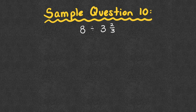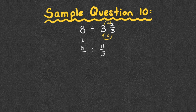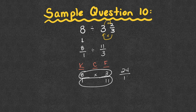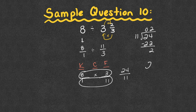Sample question ten: eight divided by three and two-thirds. Remember, eight becomes eight over one. Convert the mixed number: three times three is nine, plus two is 11 — eleven-thirds. Applying KCF: keep eight over one, change division to multiplication, flip eleven-thirds to three over eleven. Looking diagonally, we cannot simplify. Multiply across: eight times three is 24, one times eleven is 11 — twenty-four elevenths. Converting: 24 divided by 11 is two, two times 11 is 22, subtract — we get two. Final answer: two and two-elevenths.